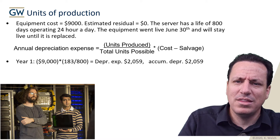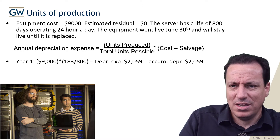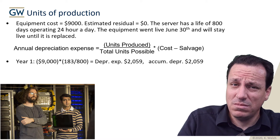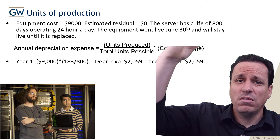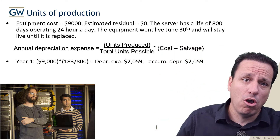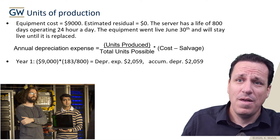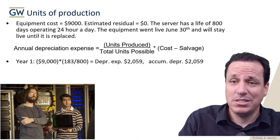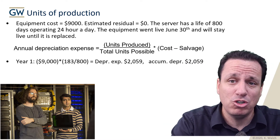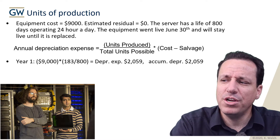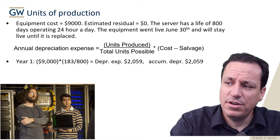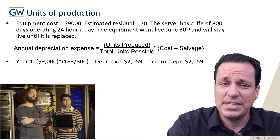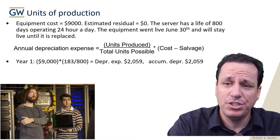Remember that when comparing units of production against the other methods, you need a little more information than just time. We usually know double declining balance is going to be higher in the first years and lower in the later years. But with units of production, it's anybody's game — it depends on how much you produce. In that first year, they're only going to recognize $2,059 of depreciation expense and accumulated depreciation.